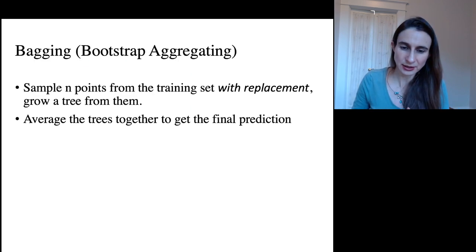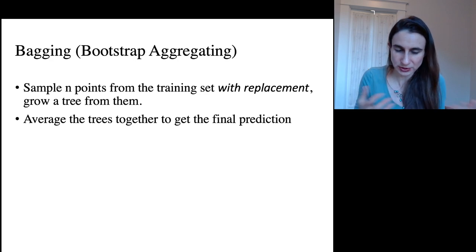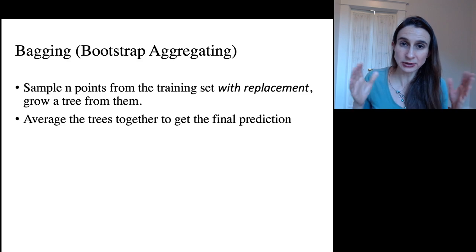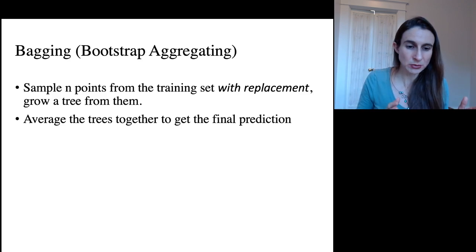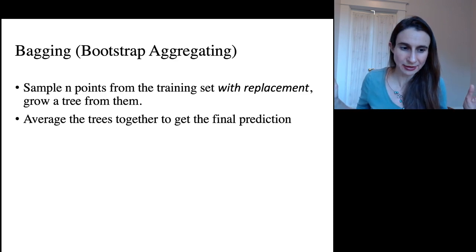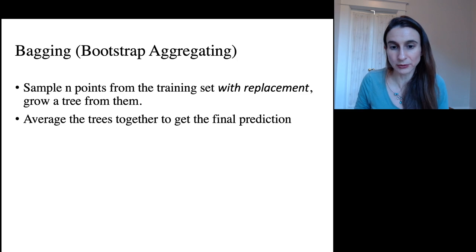And it comes from this idea of bagging, which stands for bootstrap aggregating. The idea with bagging is that you take your data set and you sample n points from the training set with replacement, and you grow a tree from them. And you do this a whole bunch of times. And then if you average the trees all together, that will give you a prediction that's more reliable than one tree alone by itself.